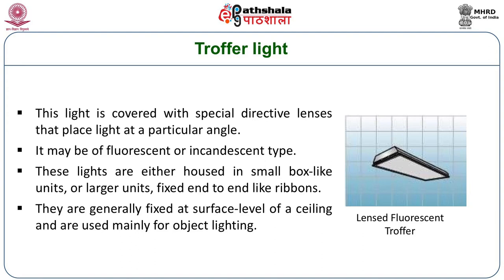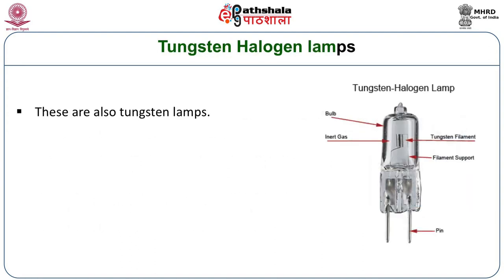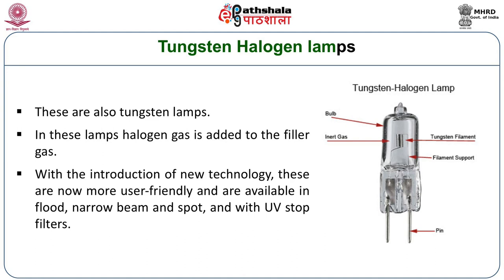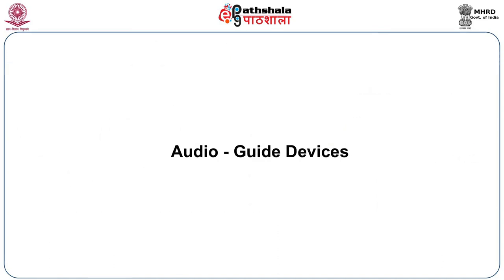Here is a picture of baffle light. Tungsten lamps, also known as incandescent lamps, are also used. Tungsten halogen lamps are also in use for lighting museum galleries. With the introduction of new technology, these are now more user-friendly and are available in flat, narrow beam or spotlight types, and also with ultraviolet stop filters.